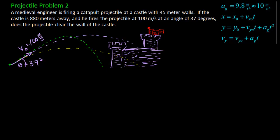So if we look at this problem one more time, what it's really asking us is, once the ball gets to the castle wall, is it above the castle wall? Or, in variable terms, this is asking us when x equals 880 meters, since that is how far away the castle wall is, is y greater than 45 meters.